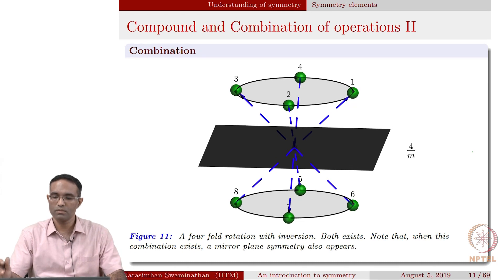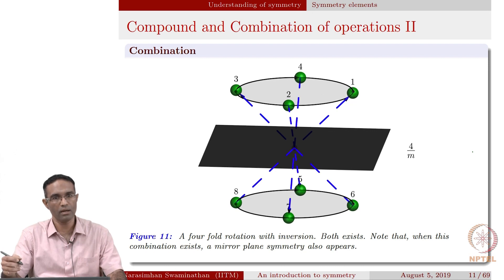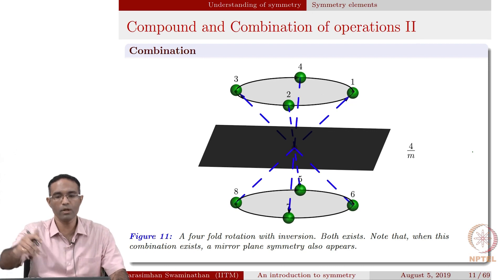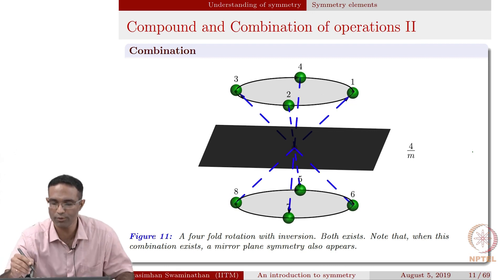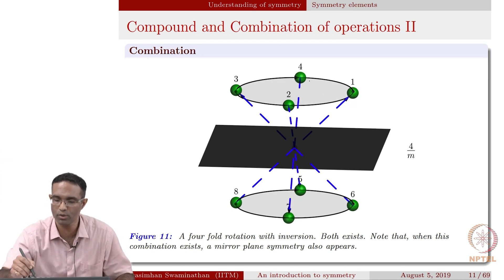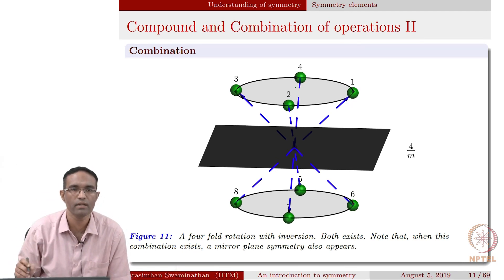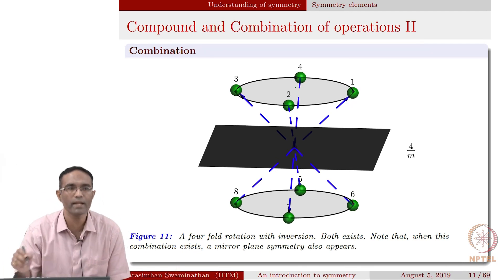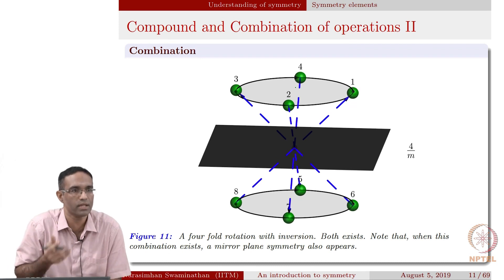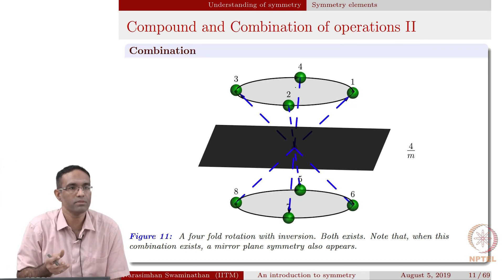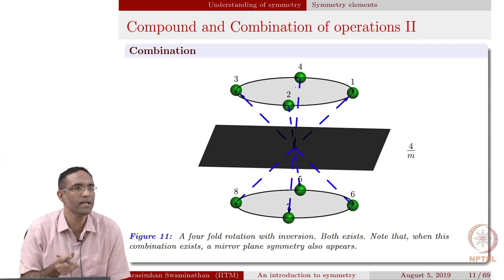The next operation is 4/m — a fourfold rotation with a mirror plane that is perpendicular to the axis of the fourfold rotation. To generate such structures, we take one atom and keep applying the operations over and over again until we generate enough atoms that they start repeating themselves.